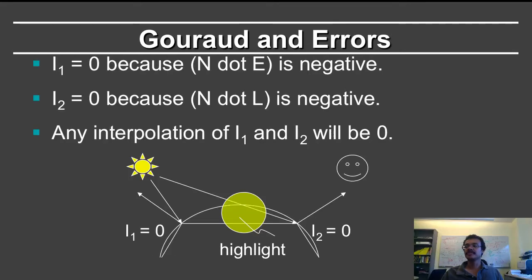We've already talked about errors in the previous segment. So here is an extreme case where i1 and i2 are zero because either the light is pointing backwards or the eye does not see the point. And now you have zeros in both cases and you want to interpolate to make a highlight. Of course that's not going to happen. If you have zero at the two vertices, the interpolation is also zero.